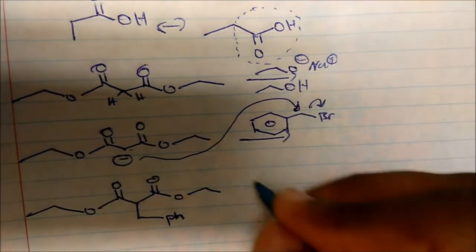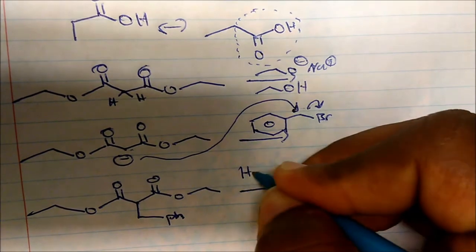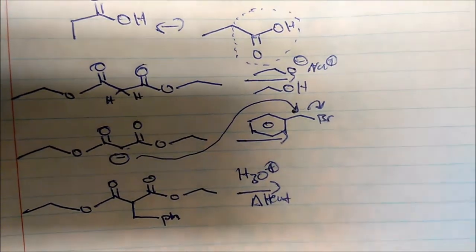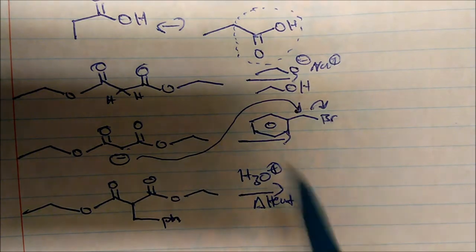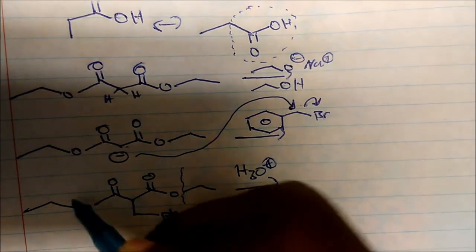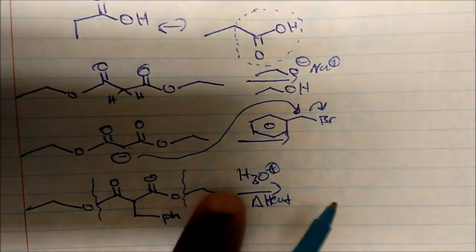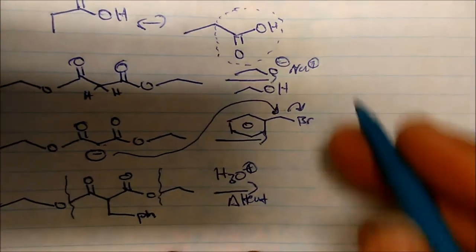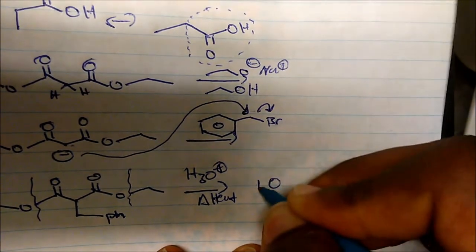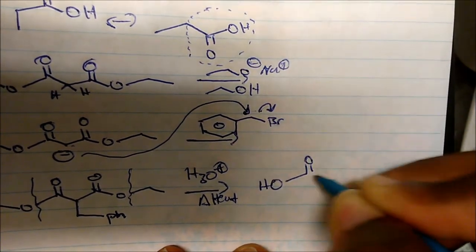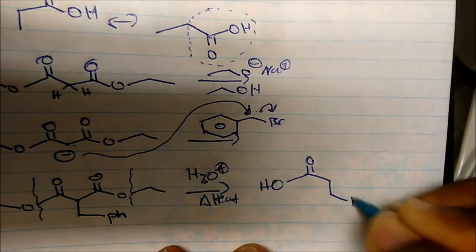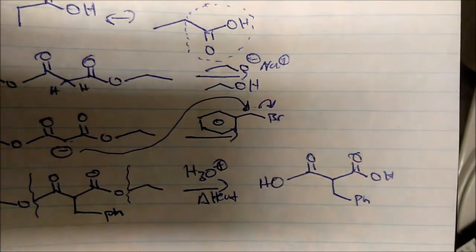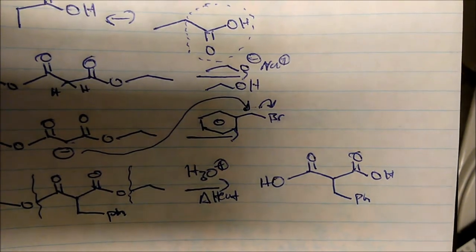Now, remember we said what's next? We hydrolyze with acid and heat. Heated conditions. Remember we said that we form the dicarboxylic acid. And these two will actually go as methanol—will actually go as ethanol, which we don't care about. So when we hydrolyze, we form the dicarboxylic acid. There's our Ph. There's our dicarboxylic acid group.